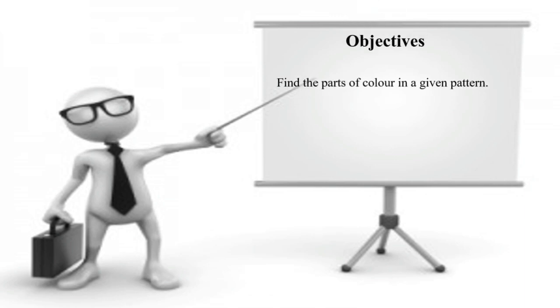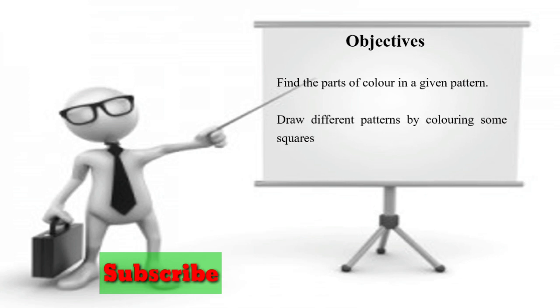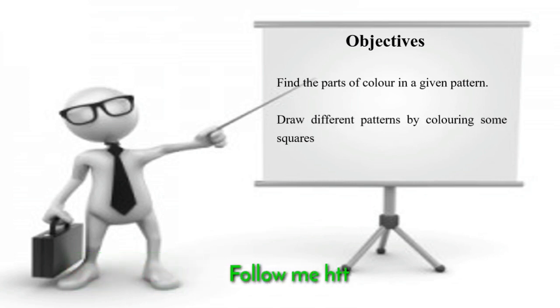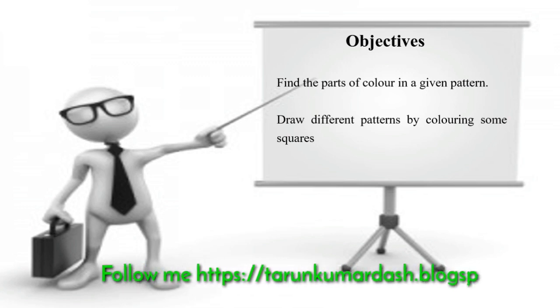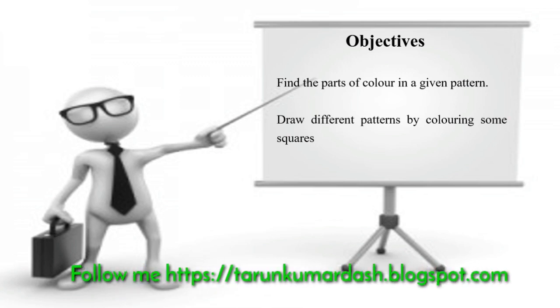Before going to the class, let's look at the objectives of this lesson. The objectives are: number one, find the parts of color in a given pattern; number two, draw different patterns by coloring some squares.